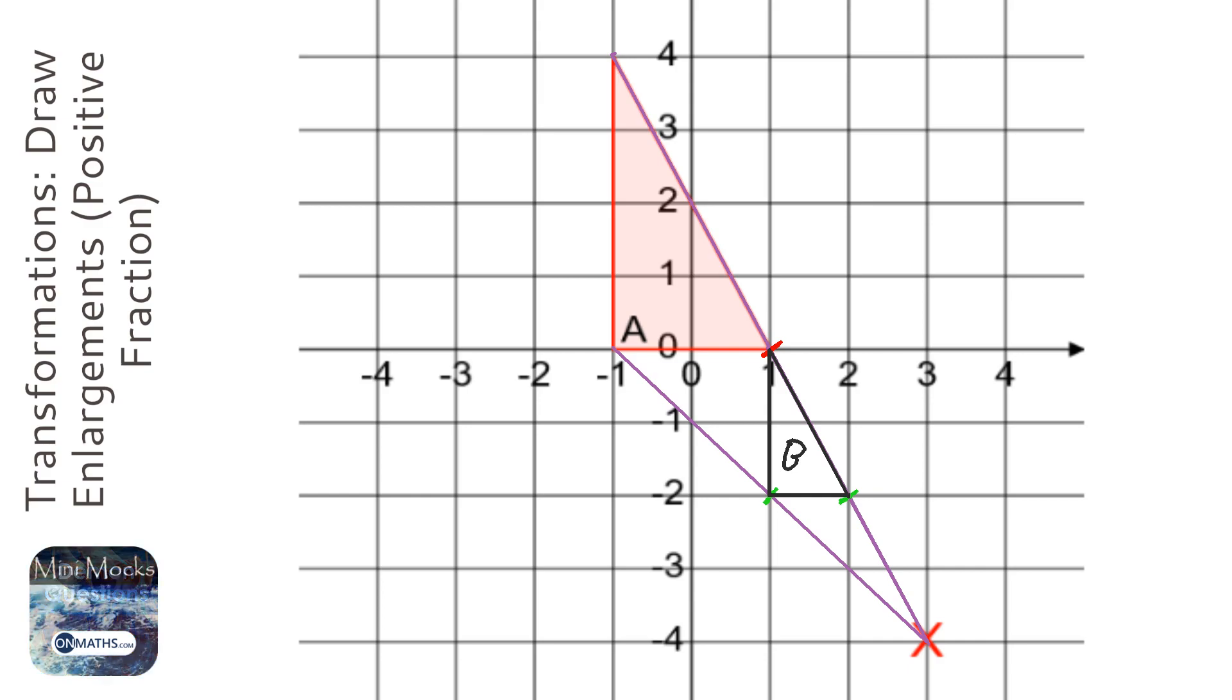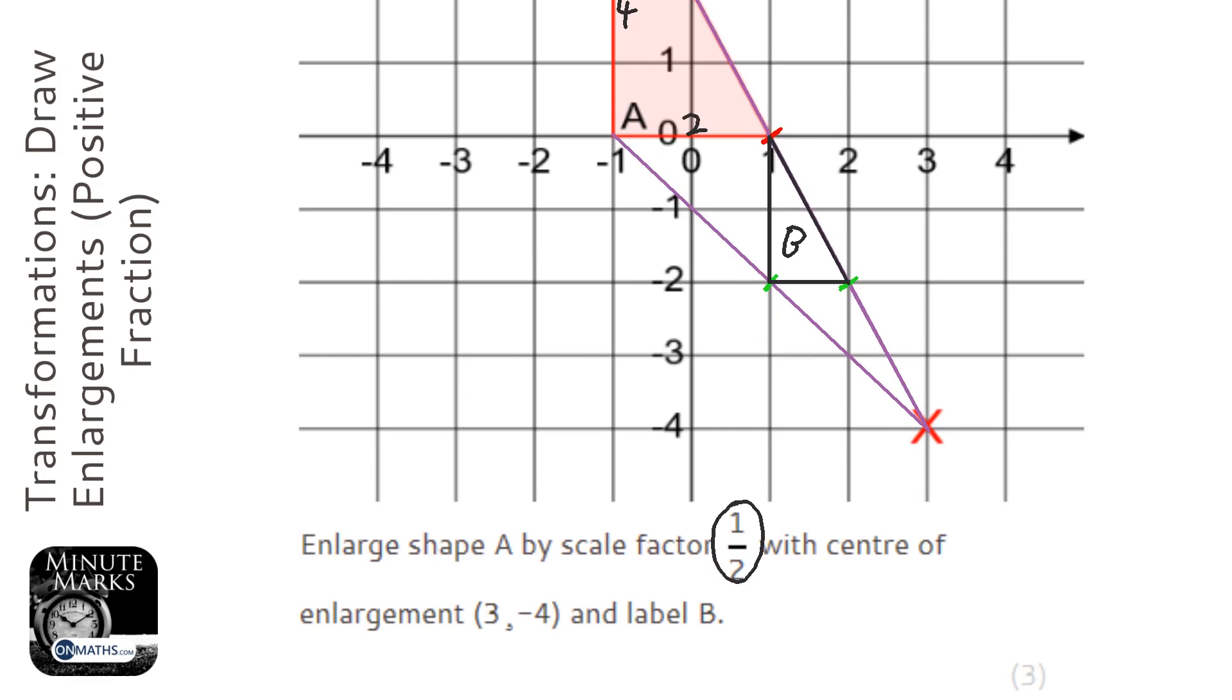Let's just check - A was 2 wide by 4 up, and let's times both those by half, that will be 1 wide and 2 up, which is the case for B.